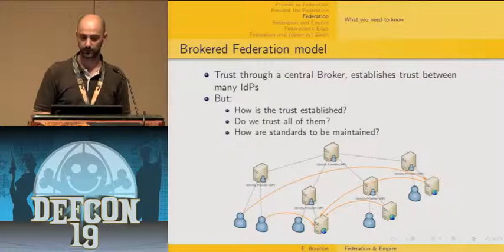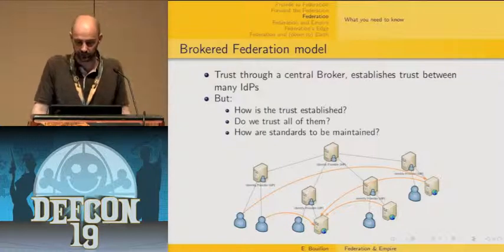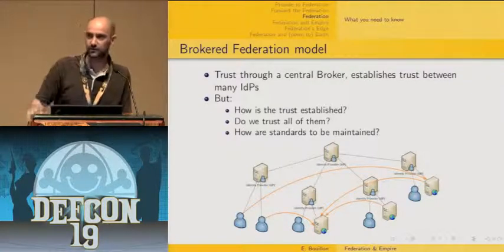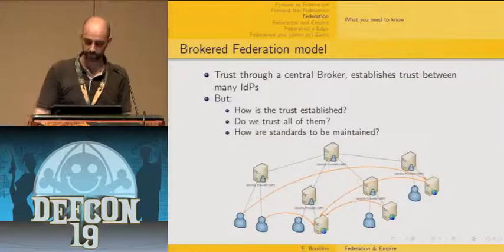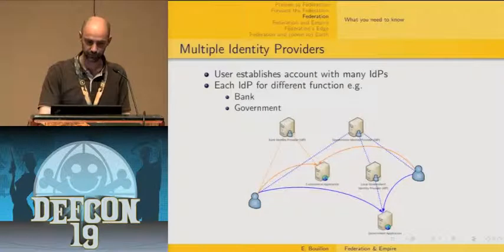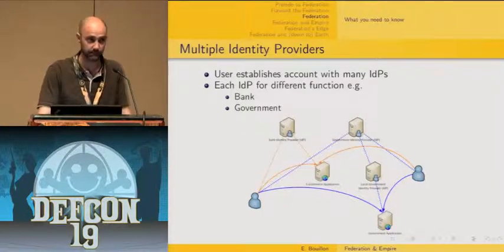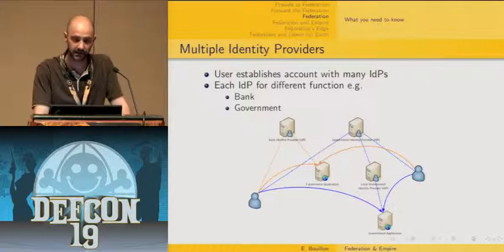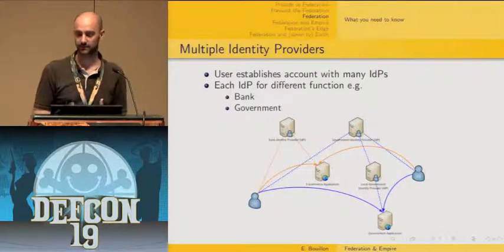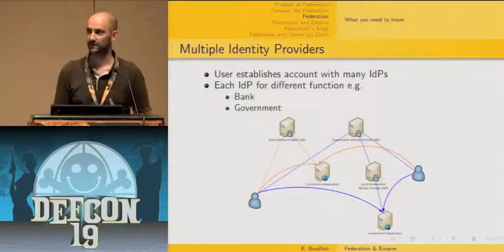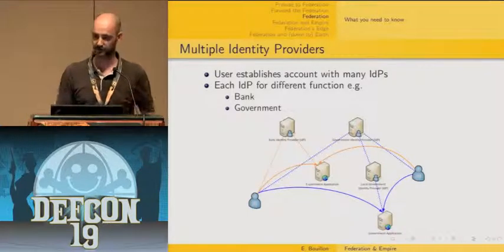Here is basically how WS-Federation works in a simple use case. Your browser connects to a web application; since you provide no claim, it redirects you to its own identity provider. That target domain identity provider then redirects the browser to the user's identity provider, which authenticates the user. Once authenticated, the identity provider retrieves attributes from an enterprise directory, builds a signed claim, and sends it back to the browser with a post redirect to the web application. The application's identity provider verifies the signature, possibly modifies attributes, re-signs it, and the web application grants access based on the claim. Users can also have several identity providers depending on context.